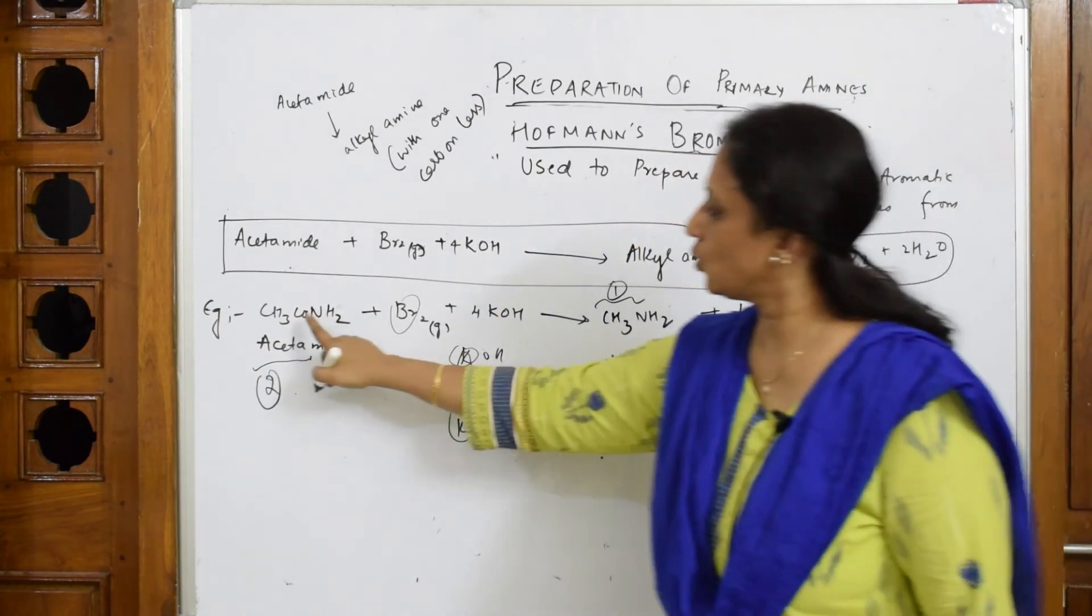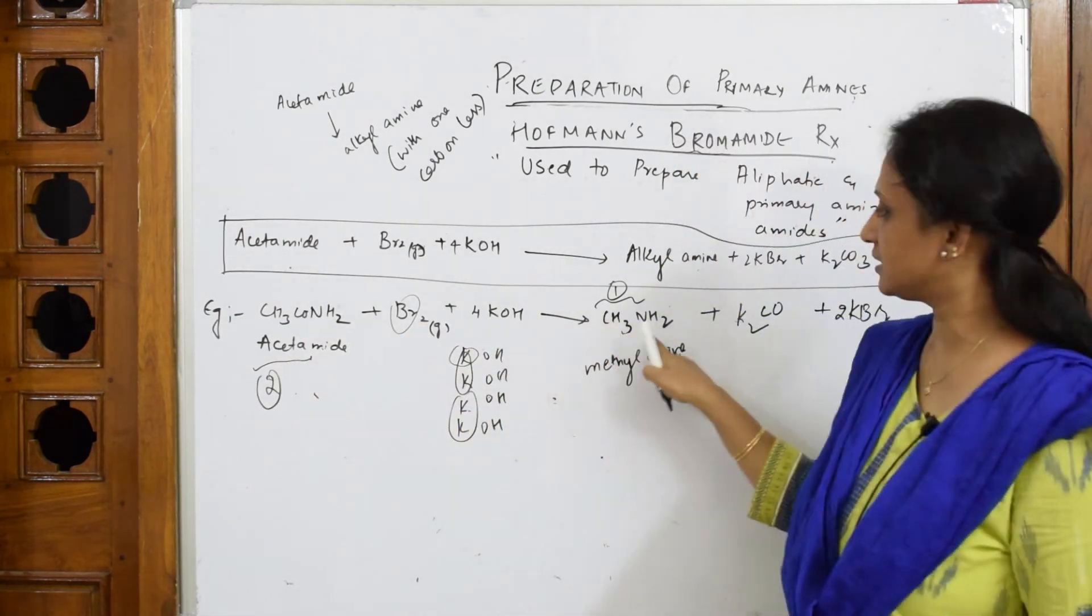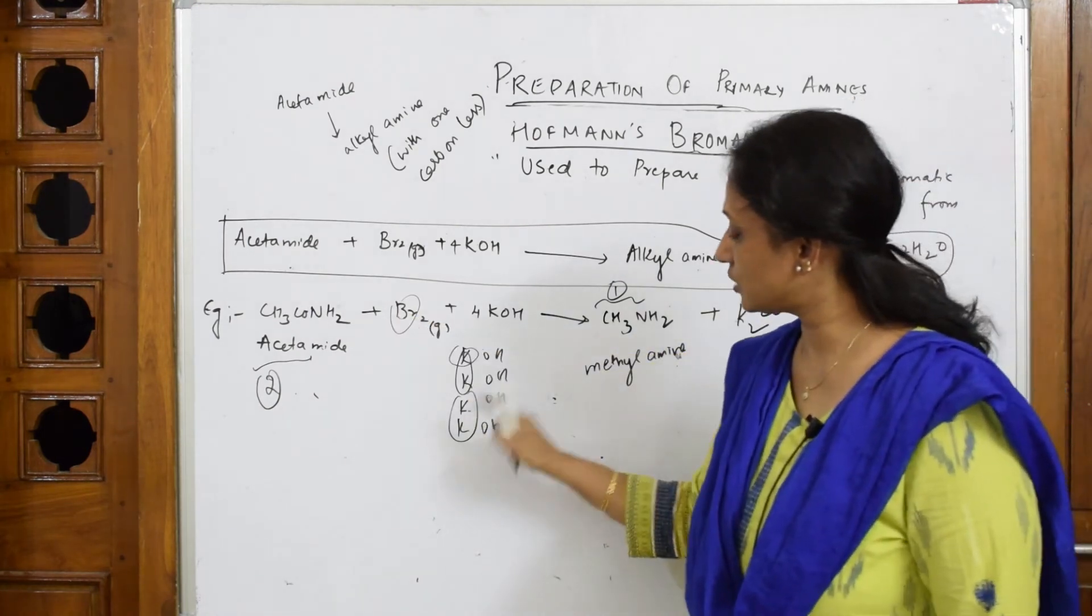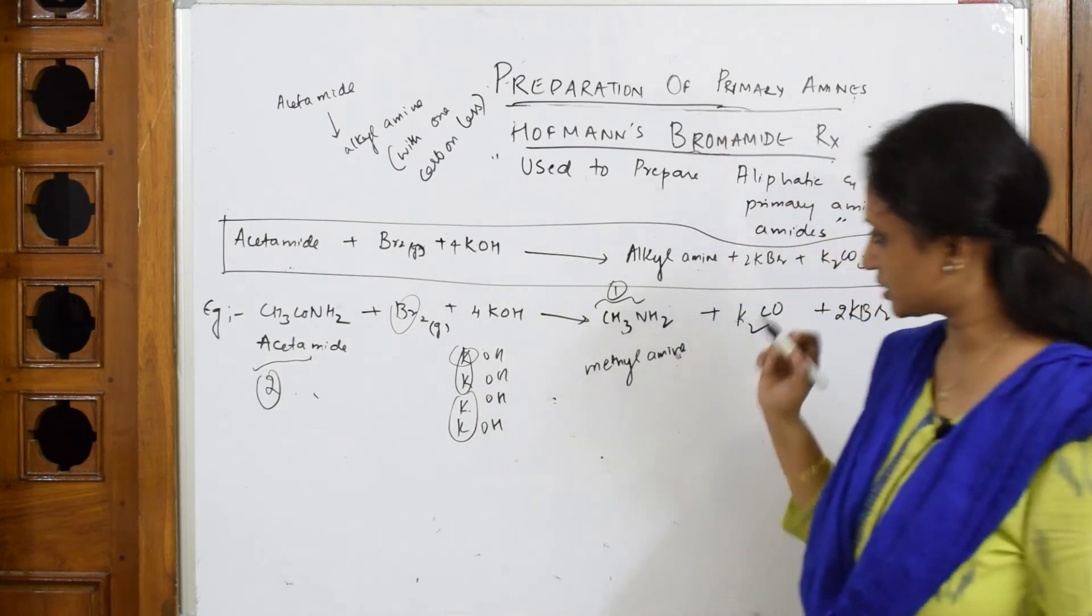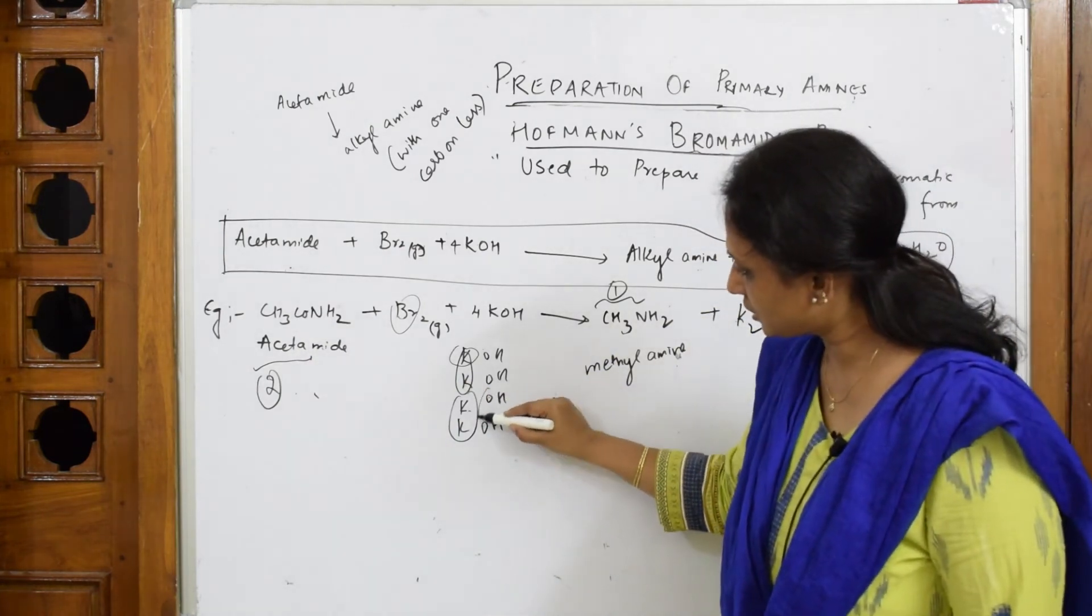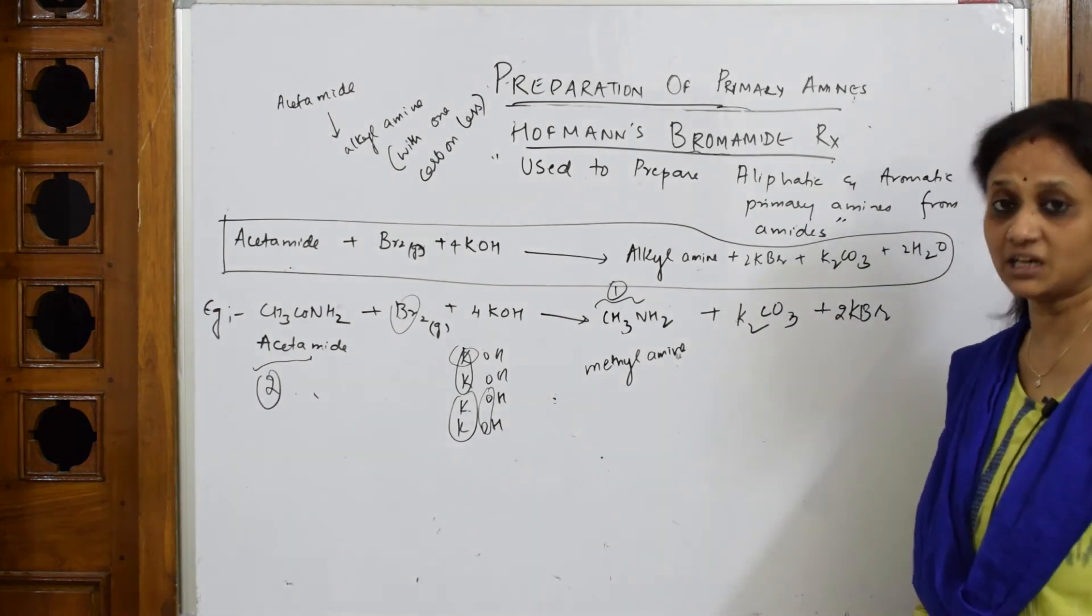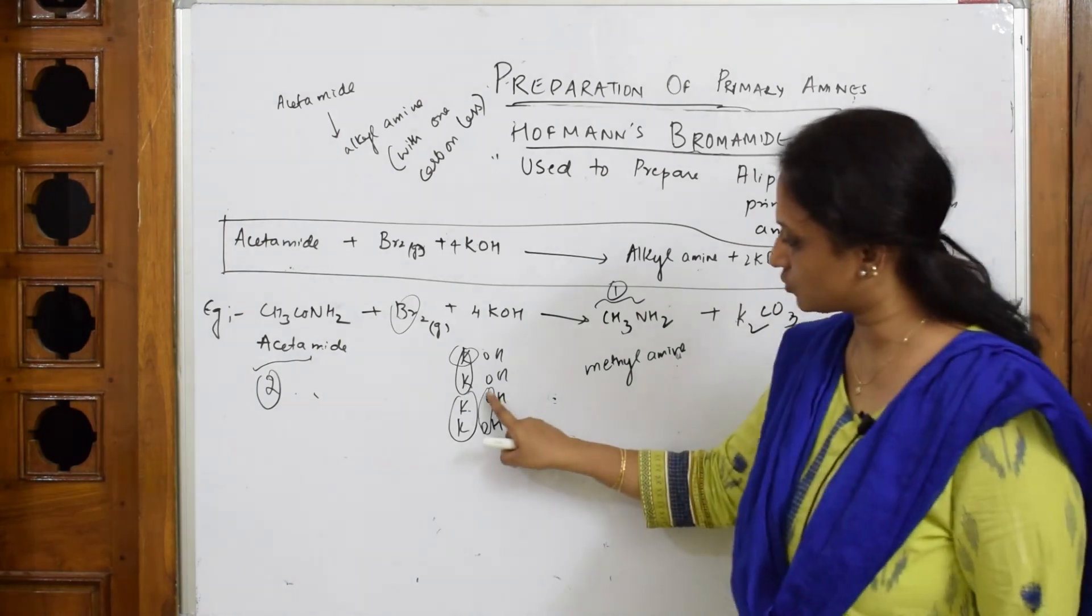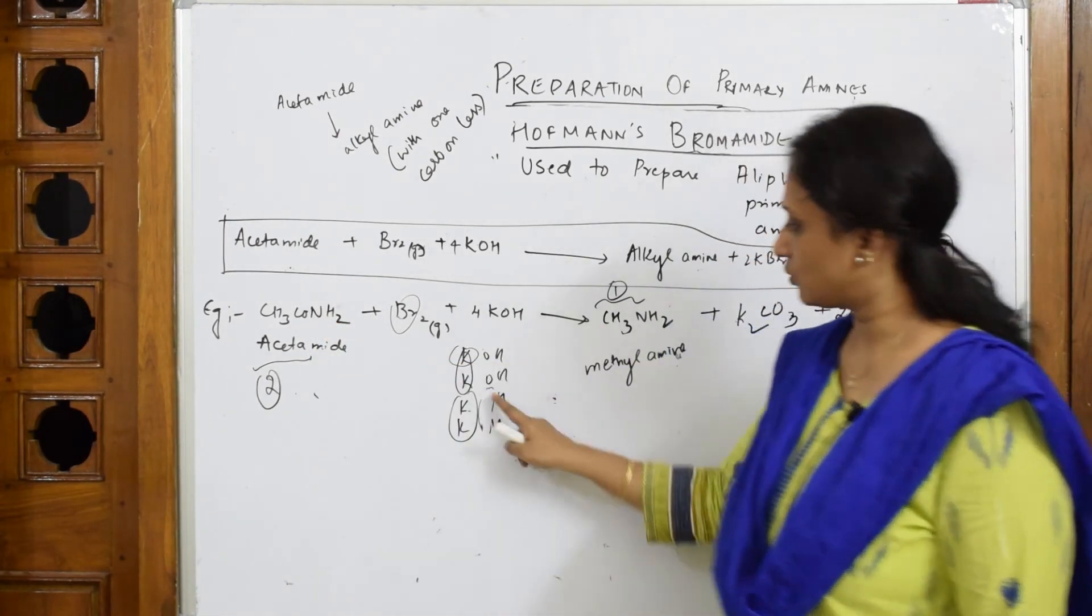K2CO3. This is out, this is out, done. These two are out with Br, these two are out here. CO is also coming out but observe carefully, CO3, potassium carbonate. Three oxygens have gone, so what are we left with?